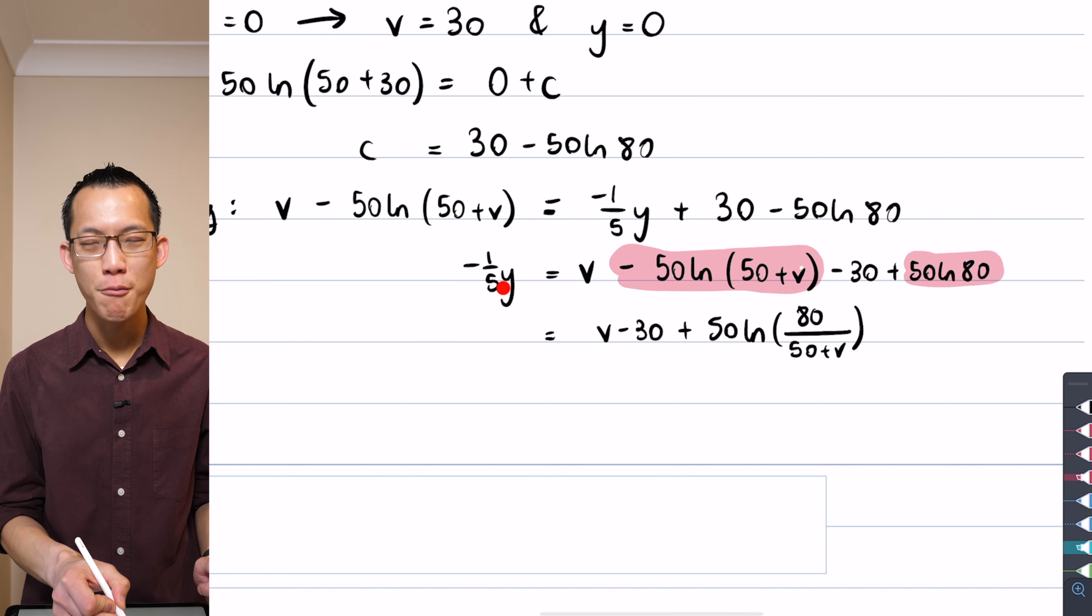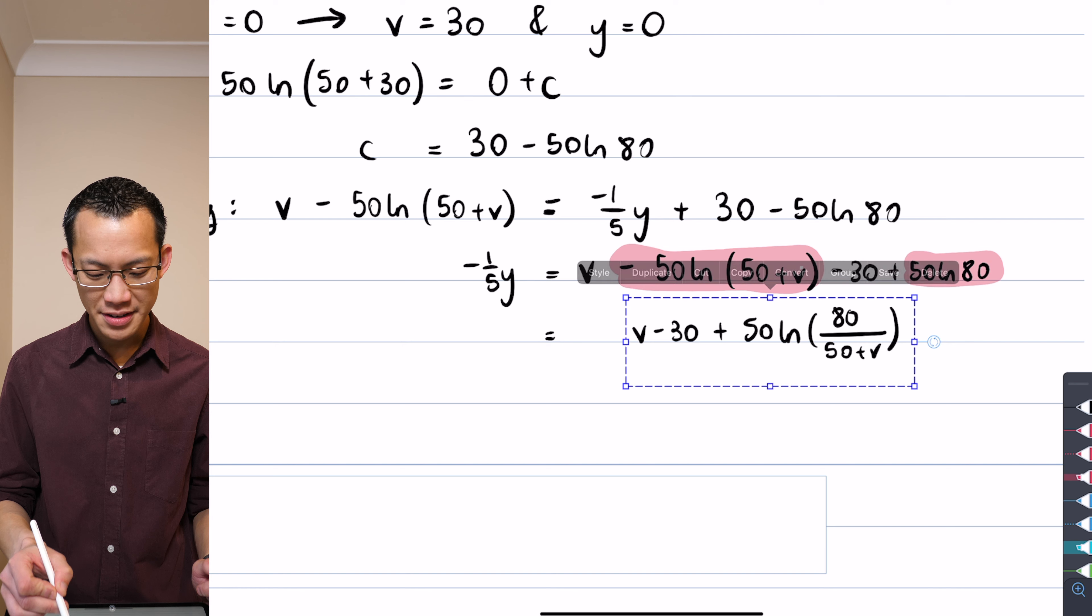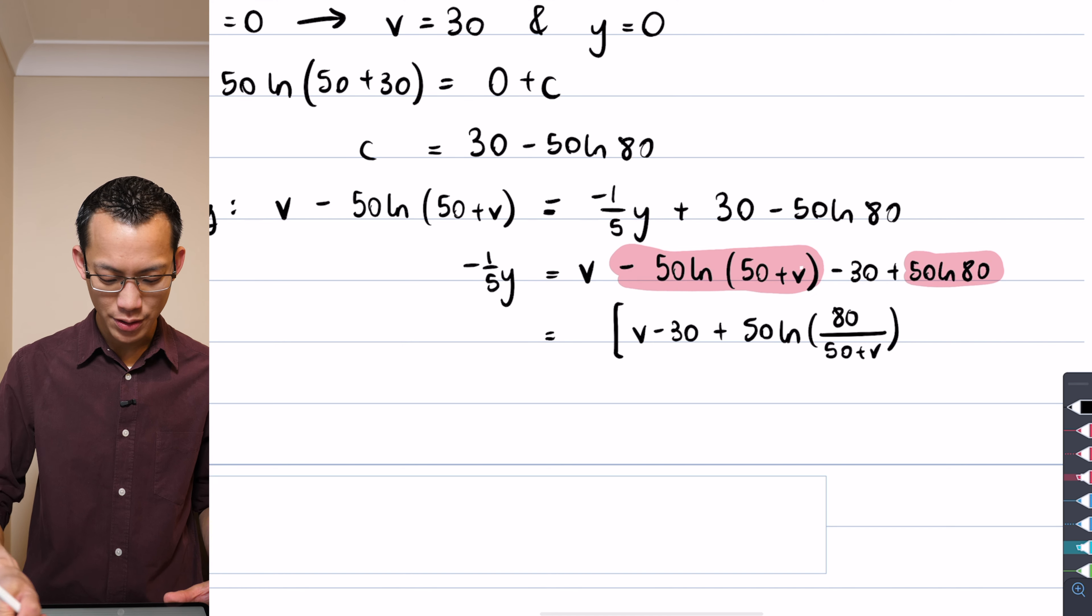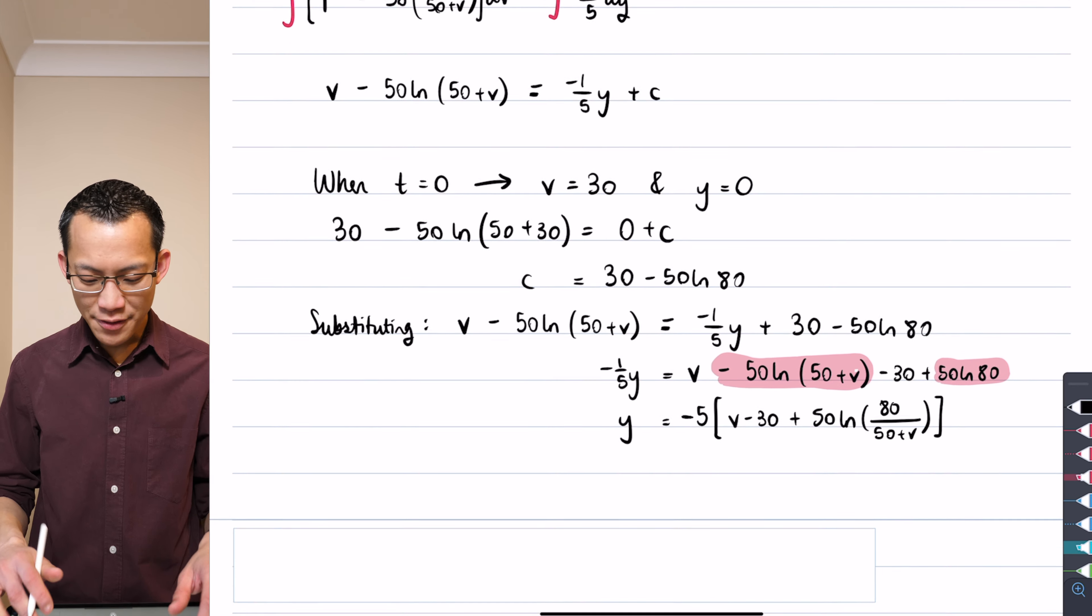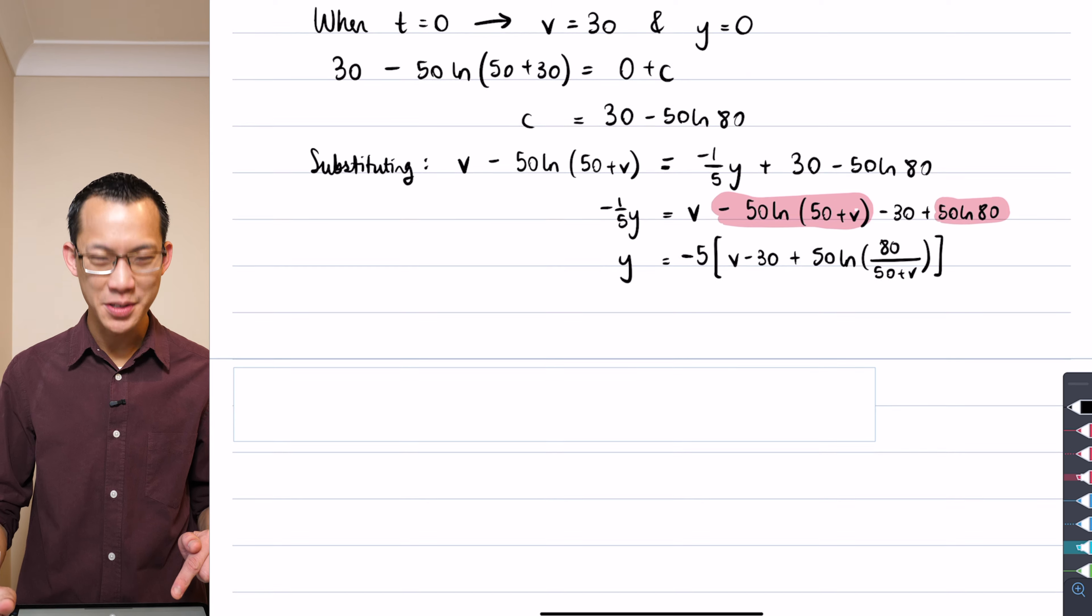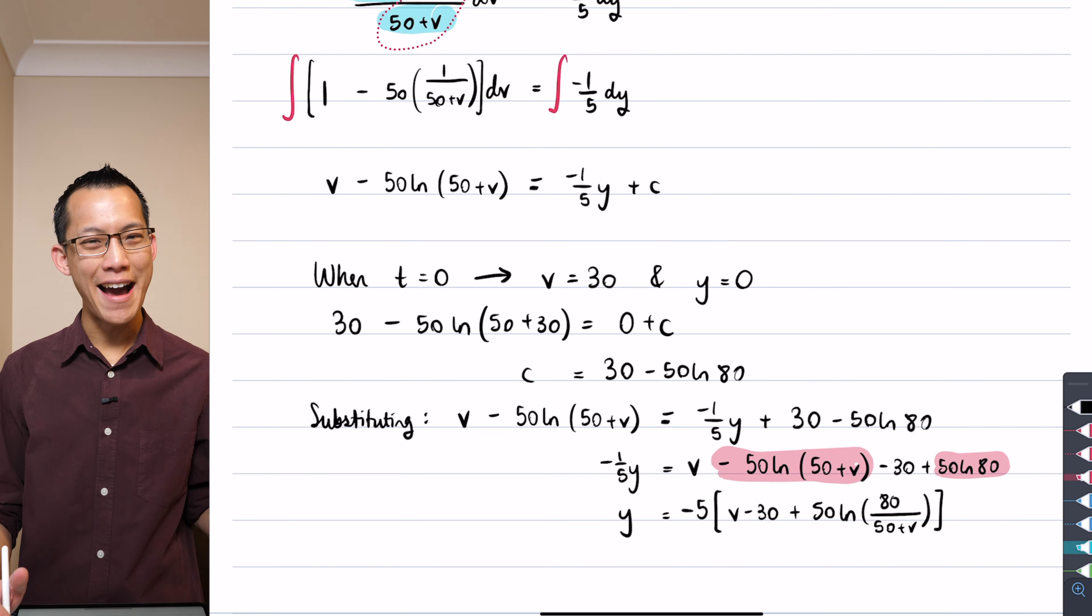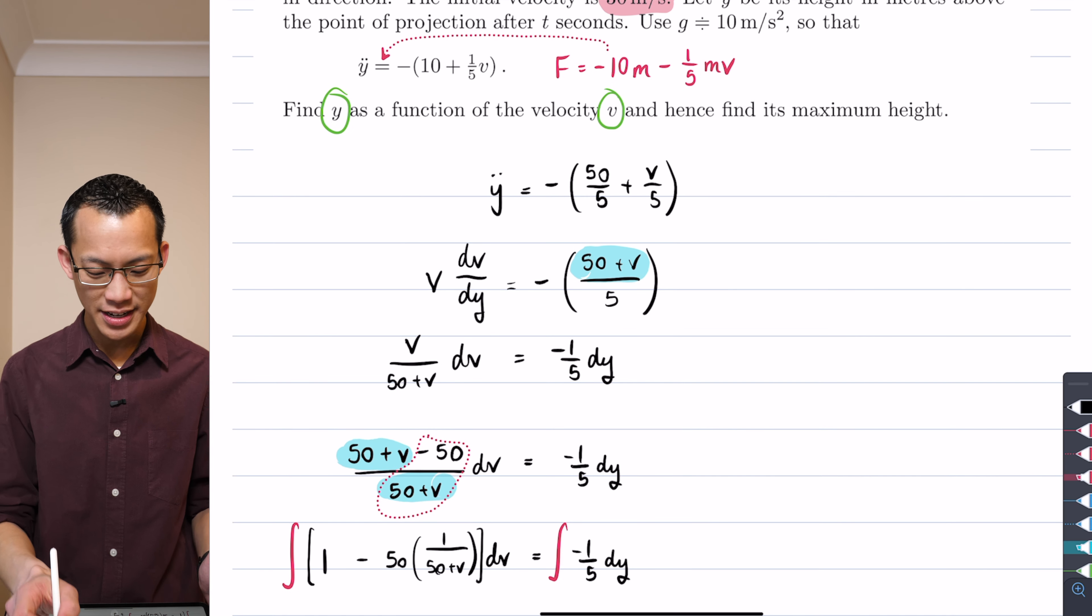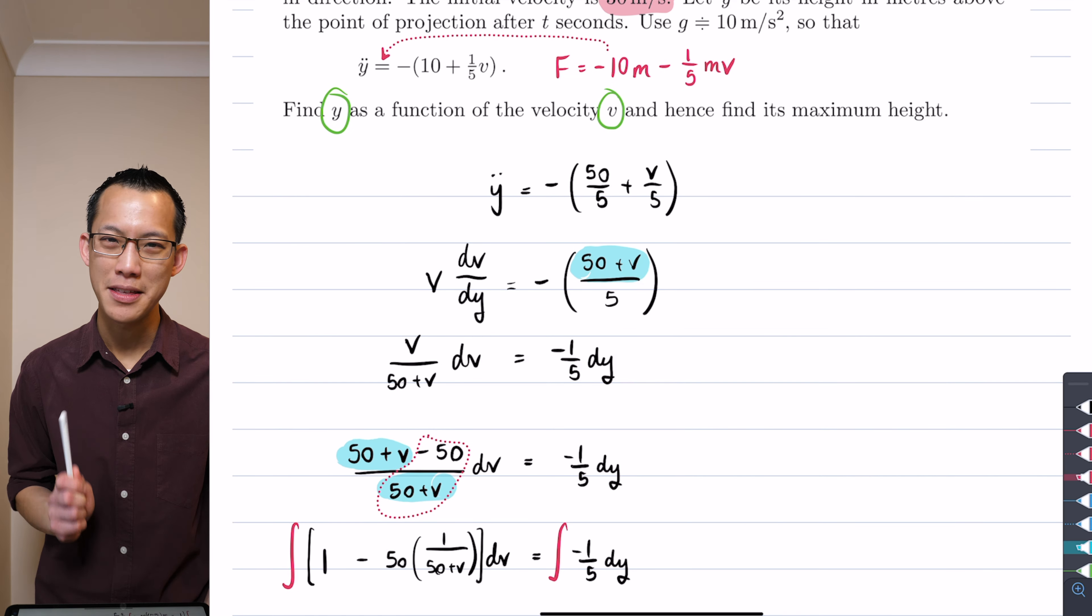Now you can see from there all I need to do is make y the subject, which is to multiply through by minus five. So I'm going to take that whole lot there and multiply through by minus five and that will give me y. Now I have not quite left enough space here because I want to do something on the next page. We have y as our function of velocity and now we want to find its maximum height. So think about this with me. This shouldn't be too difficult to work out but you will need your calculator.